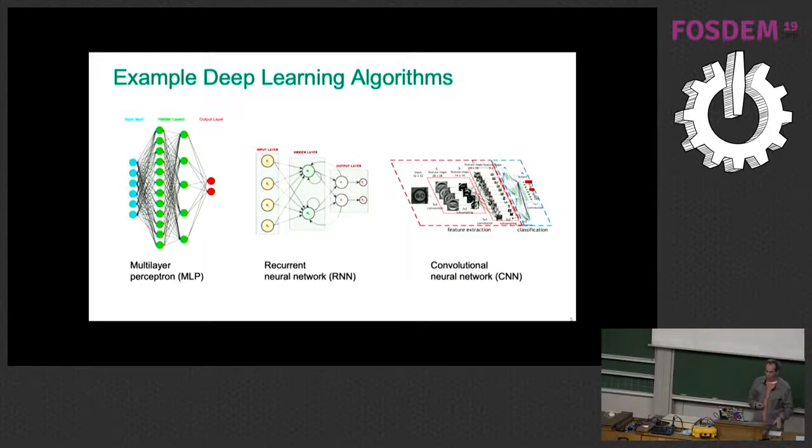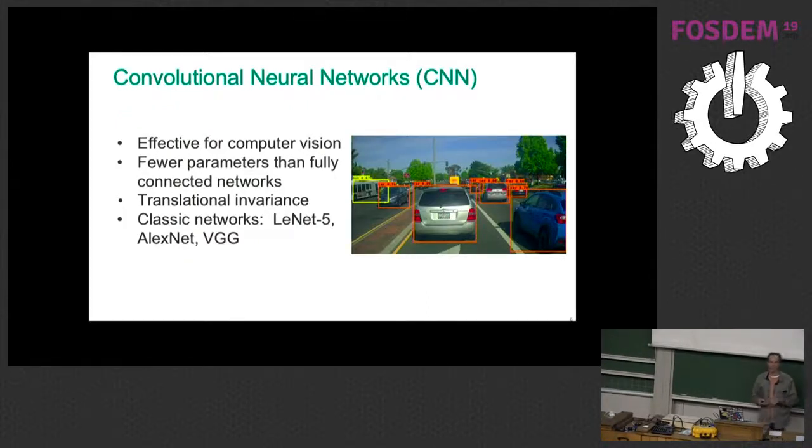I'm going to talk a bit more about convolutional neural networks. Convolutional neural networks are very effective for computer vision. You can see on the right side of this slide, this is an image from an autonomous vehicle. What this vehicle is able to do using these convolutional neural networks is to identify objects in the scene and classify them with a probability.